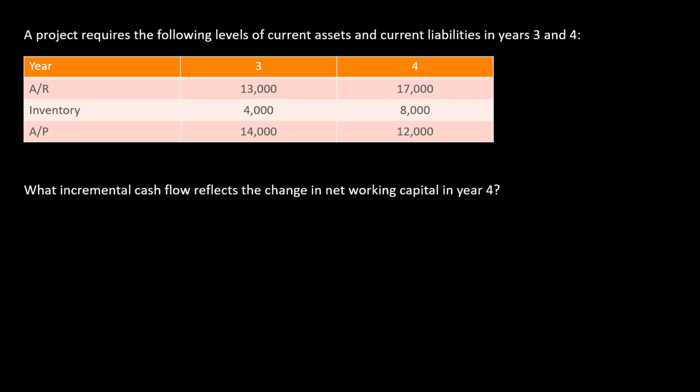Here's a simple example of the working capital needs of a project, and we're going to calculate the associated cash flows. Recall that there are three steps in calculating the incremental cash flows associated with net working capital. Step one: we need to compute the levels of working capital — that's assets minus liabilities in a given year.